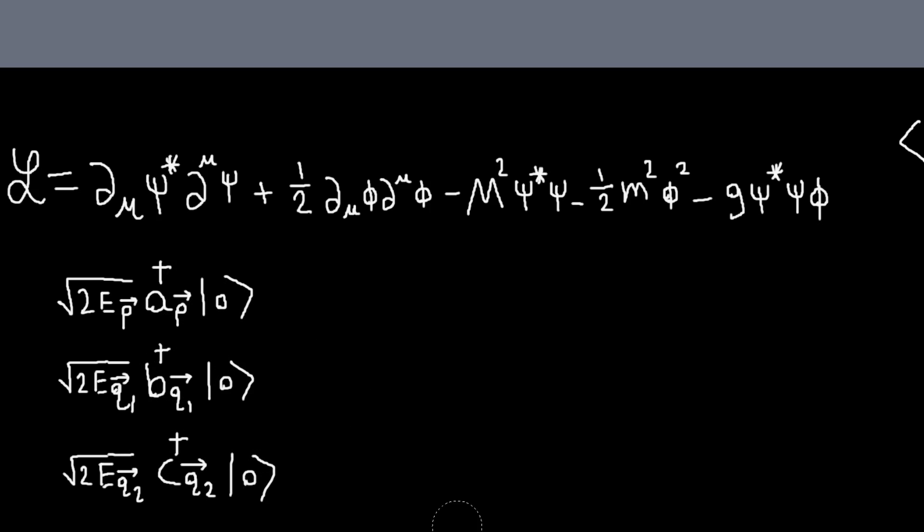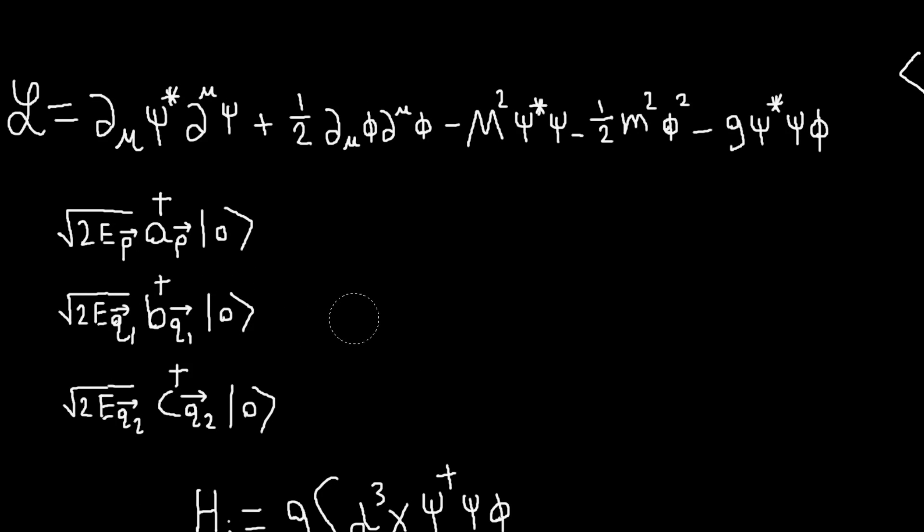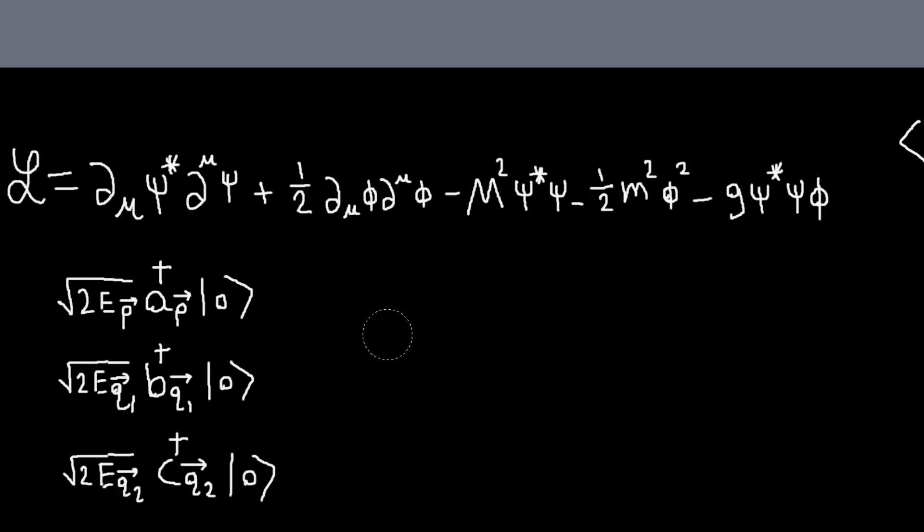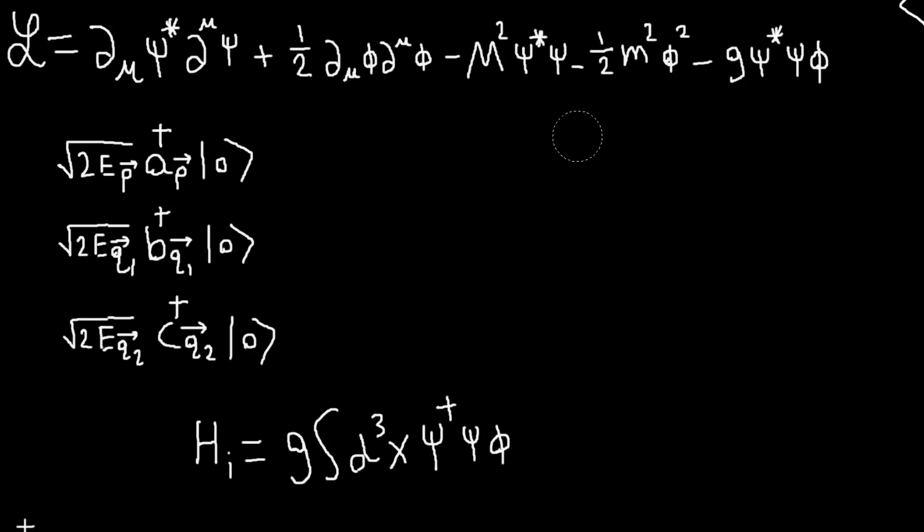And so we have one-particle states that look like this. And so the point is, we actually do know everything we need to know about the free theory of this Lagrangian. So, knowing that, we just need to identify our interacting term in the Hamiltonian as this guy.